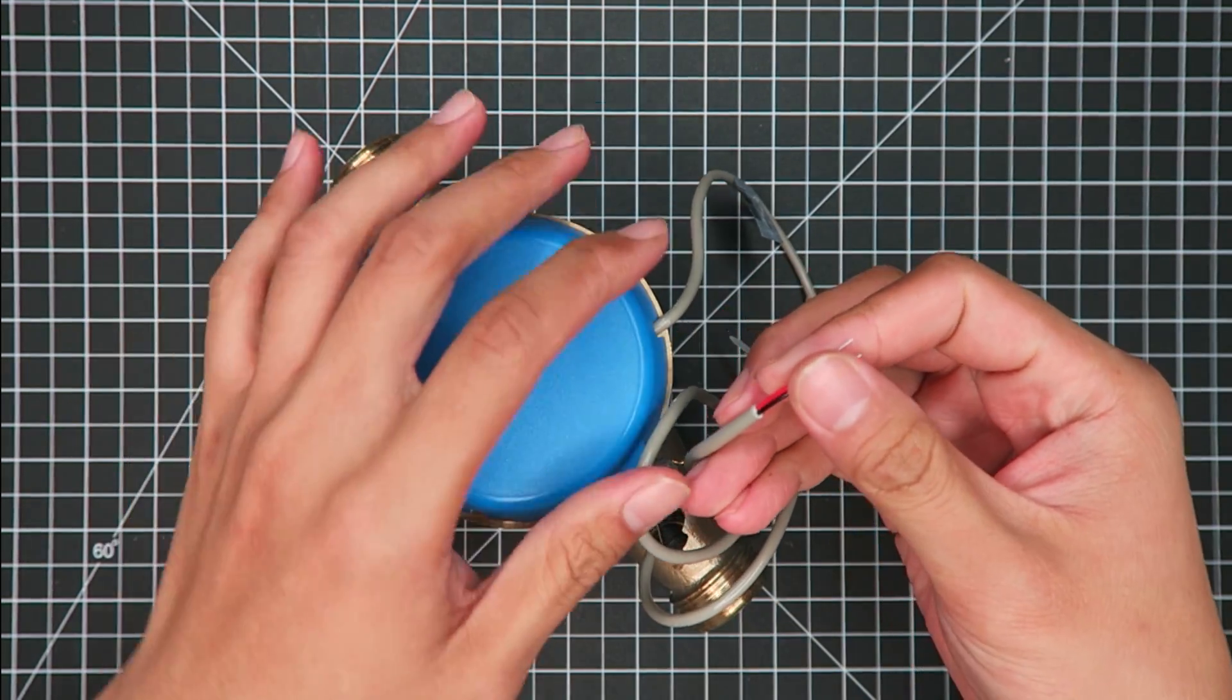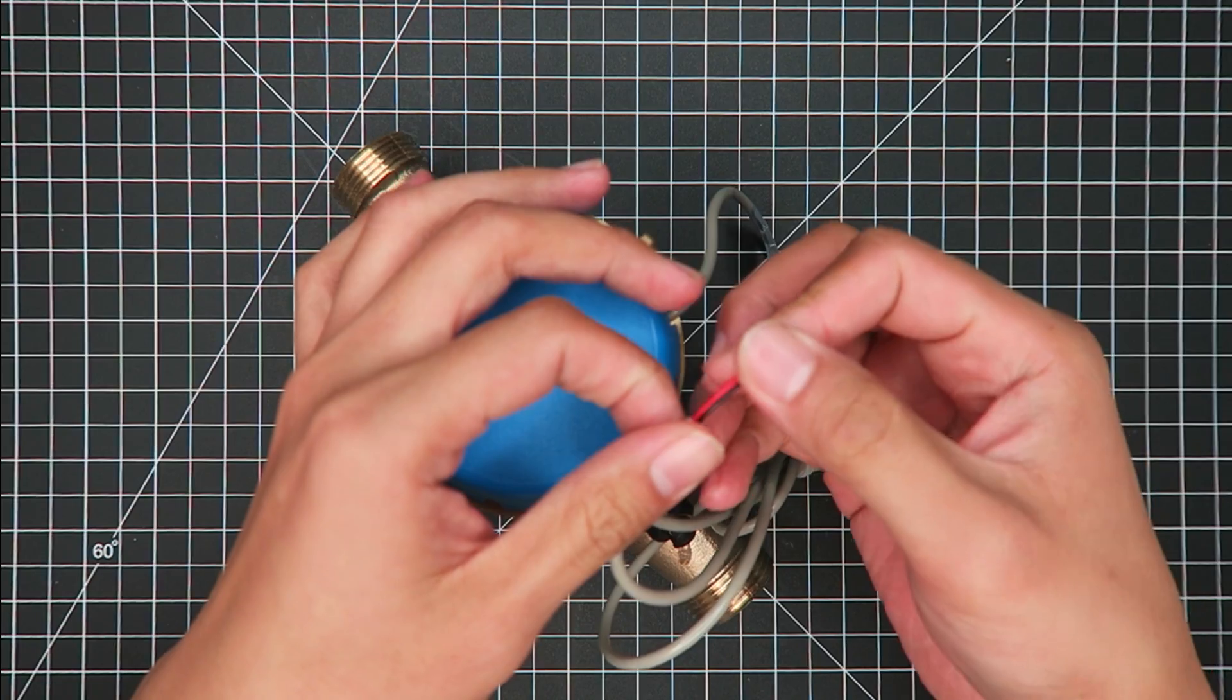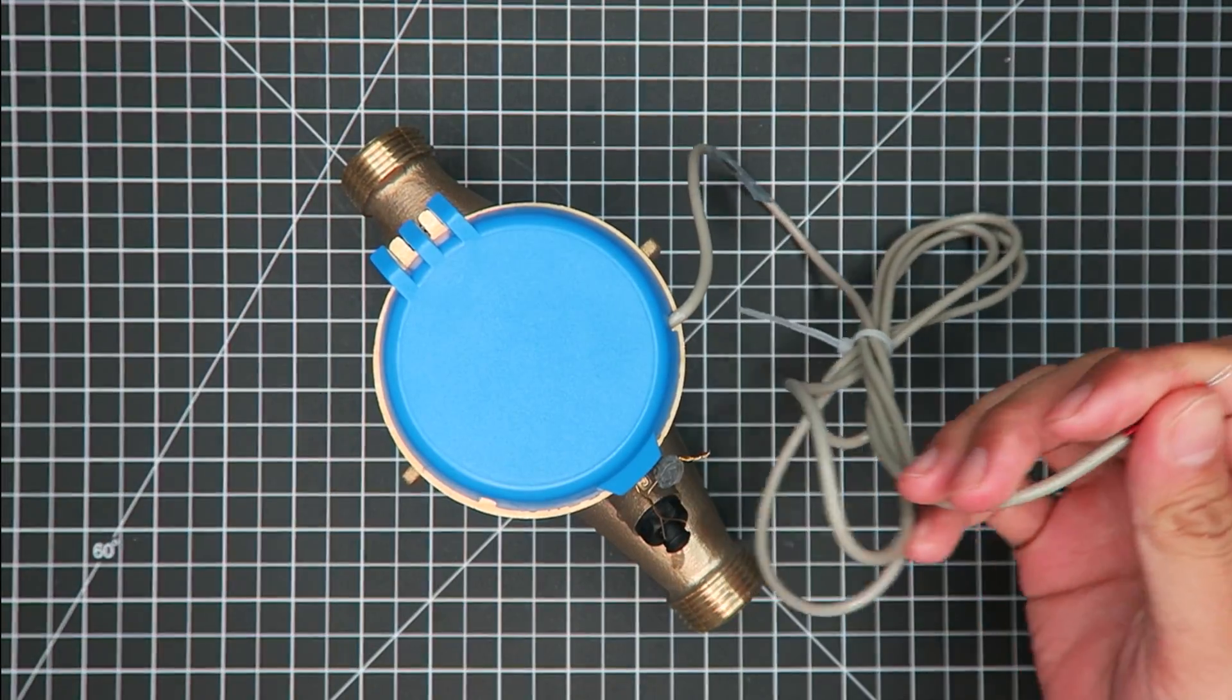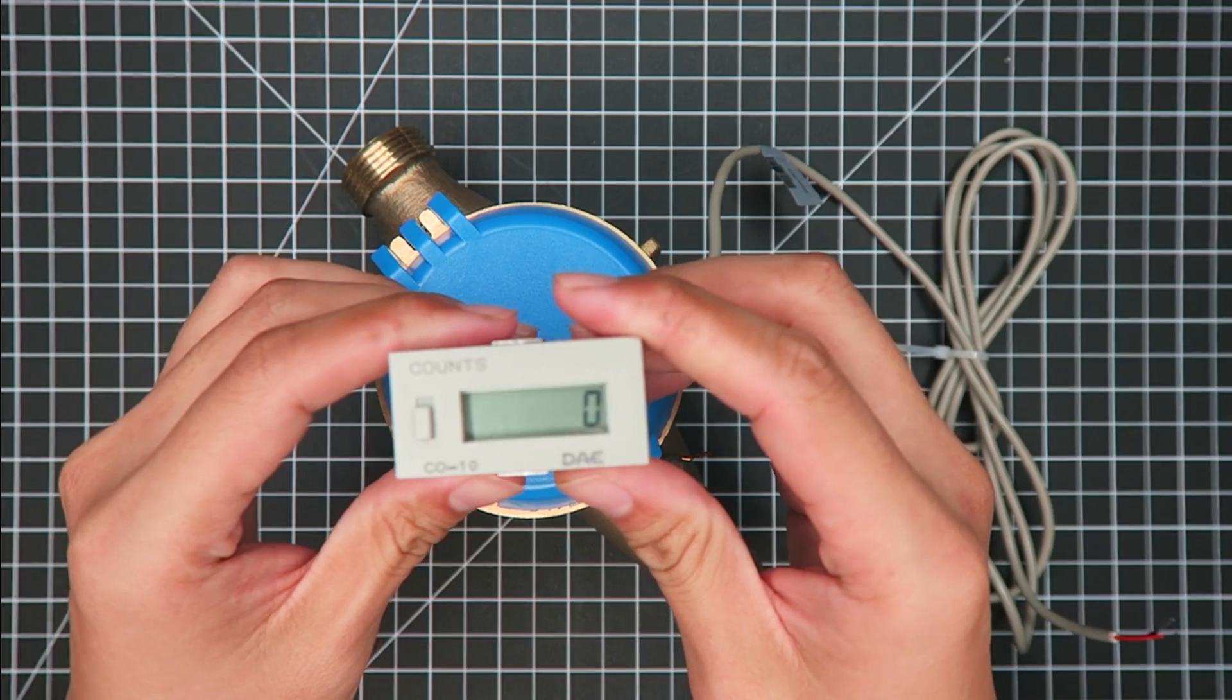So as you can see, this water meter comes with a two-wire dry-contact pulse output. You can easily pair it up with the CO-10.